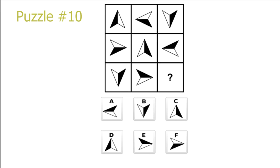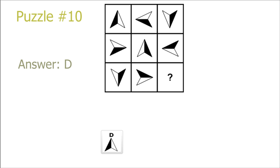Puzzle 10. The easiest way to solve this puzzle is just by looking at the rows and seeing that each picture is the previous one rotated 90 degrees counterclockwise. So if we take picture 8 and rotate it 90 degrees counterclockwise, we get picture D.